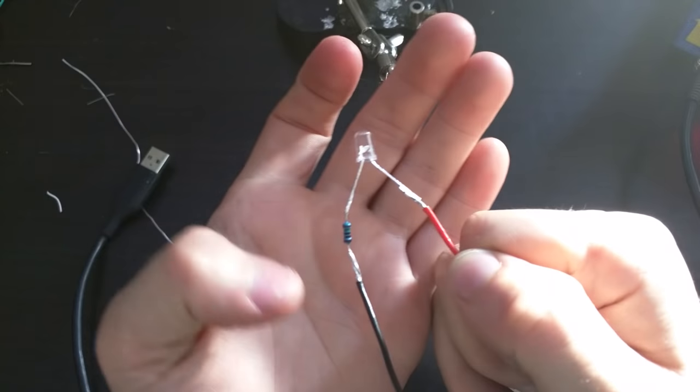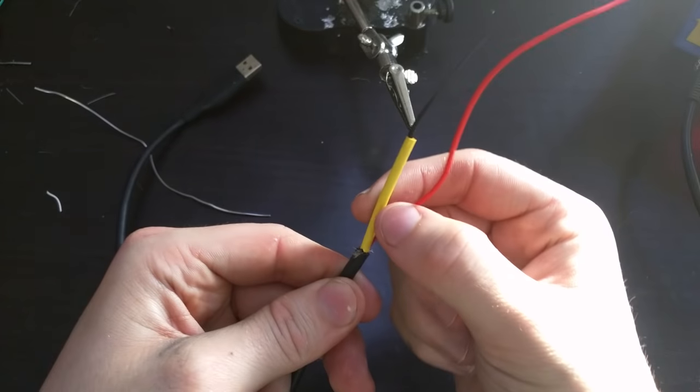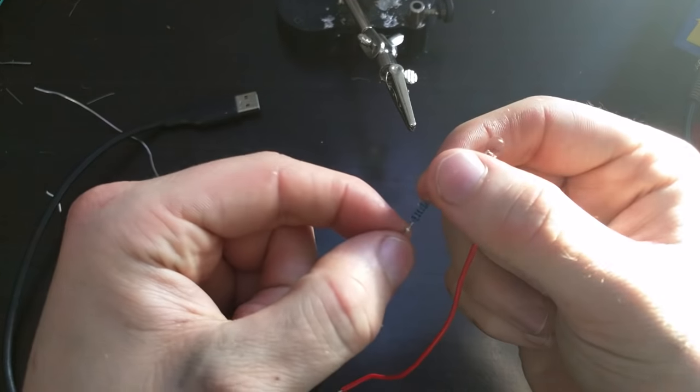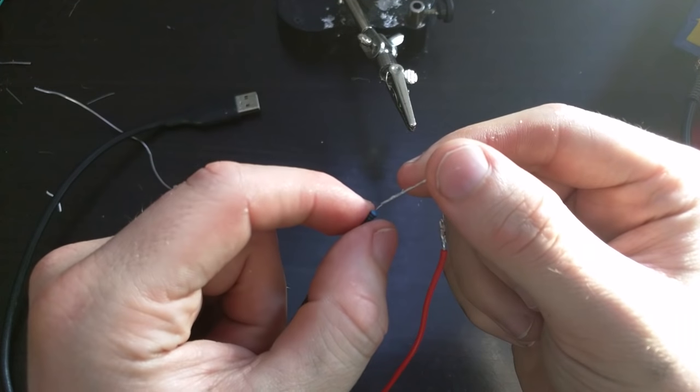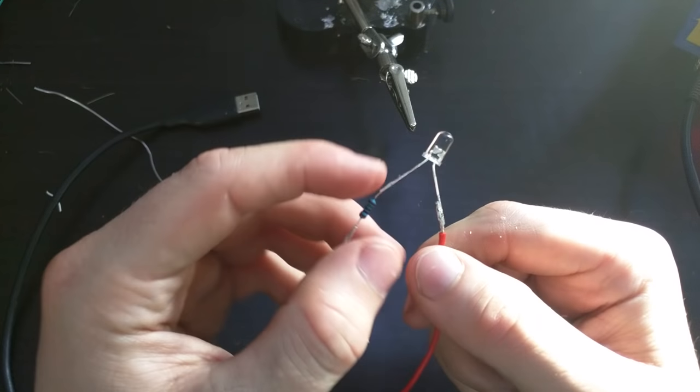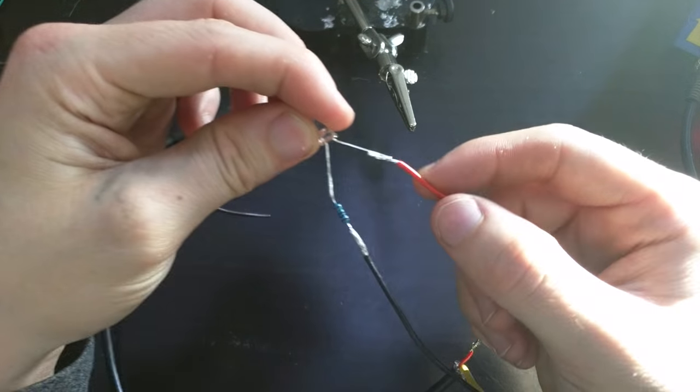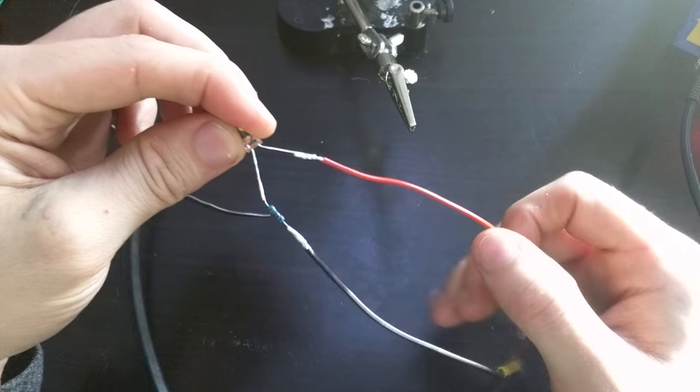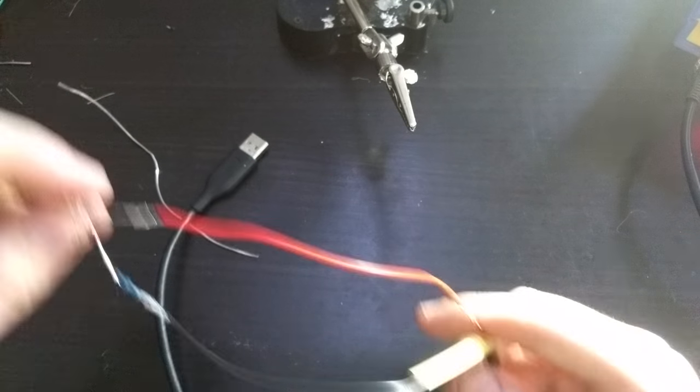We've got our USB cable here. We've got the negative lead coming from here, going to a resistor of 150 ohms, one I picked at random. And then it's going to the negative lead of the LED. The positive lead of the LED is then connected to the positive cable, which comes back to the USB power supply.